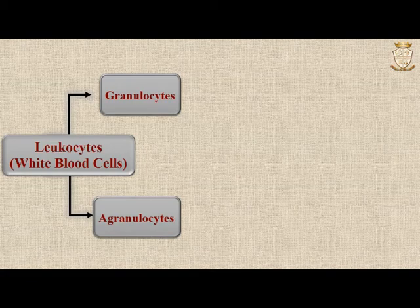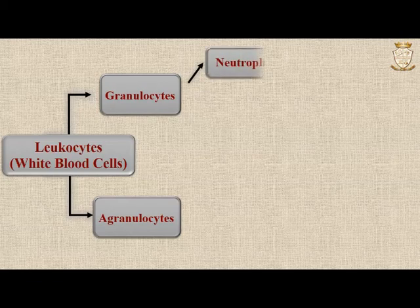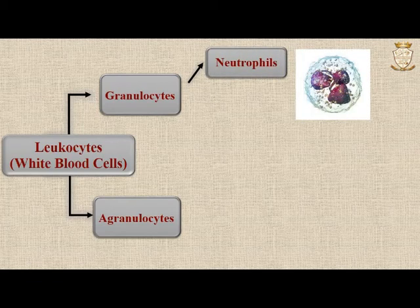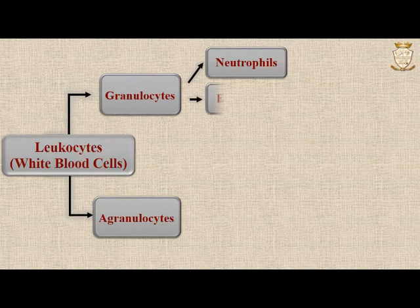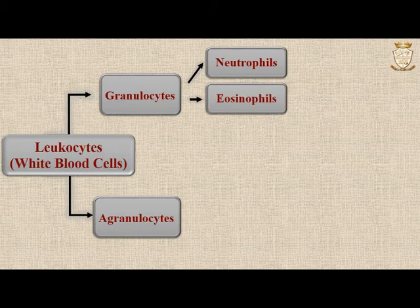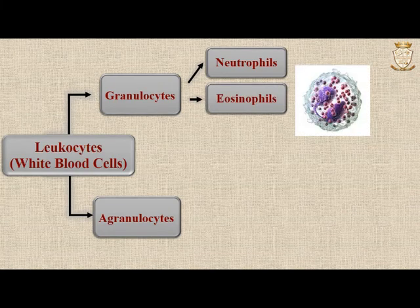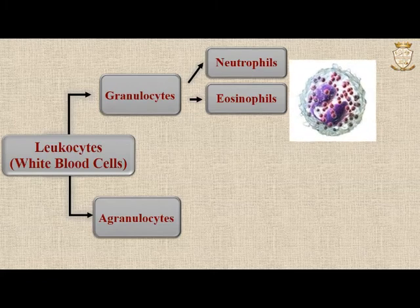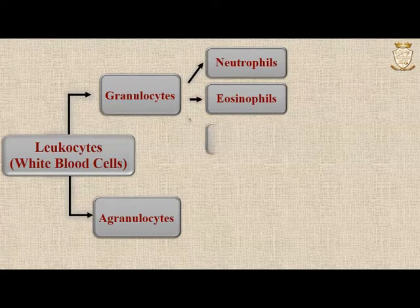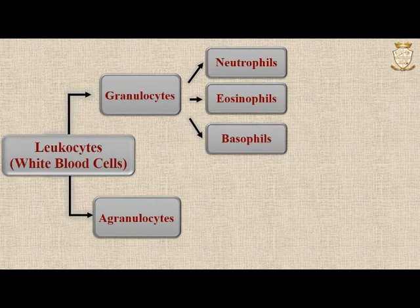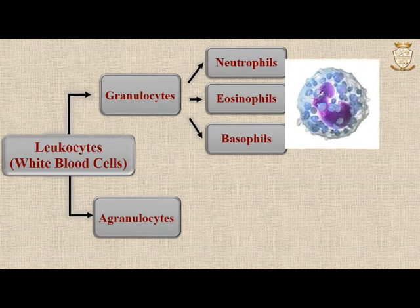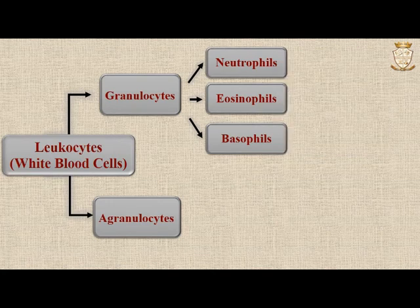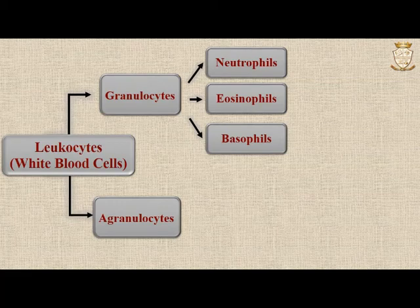There are three types of granulocytes. Neutrophils are phagocytic cells. Eosinophils function in defending our body against allergens and parasites. Basophils help to defend against parasites and release histamine and heparin.